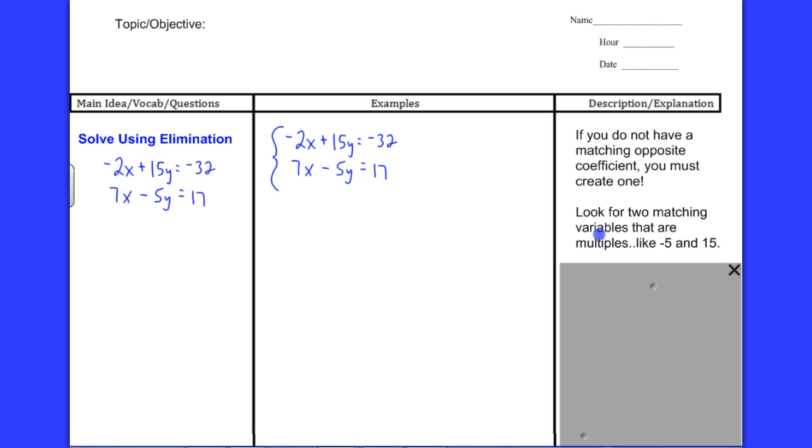To create one, you want to look for two matching variables that are multiples of each other. That's the easiest way to do that. So if I look at this, I see that the negative five and the fifteen—what I mean by matching multiples is five will go into fifteen because five times three is fifteen. That will make my life a little bit easier, but I have to do a little more work than I did in the last problem.